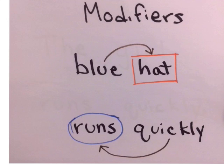On the bottom, you see the word quickly with an arrow drawn to the word runs. Quickly is an adverb describing the verb runs. With the adjective, you'll see that we draw the arrow on top. And with the adverb, we draw the arrow on the bottom so that you can tell the difference.